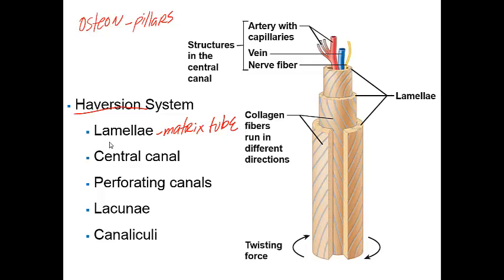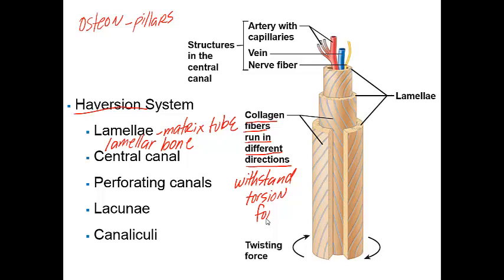For this reason we also refer to compact bone as lamellar bone. There are collagen fibers in each particular lamella that run in a single direction, but what's really interesting is there's an alternating pattern — collagen fibers running in different directions — which allows the bone to withstand torsion forces, making the lamellar bone act like a twister resistor.